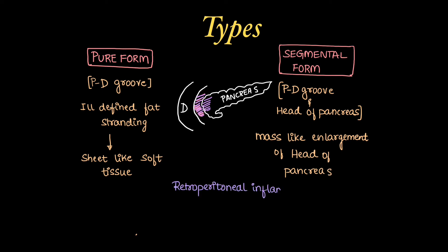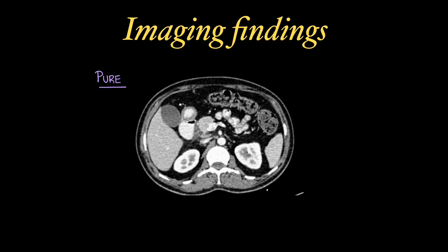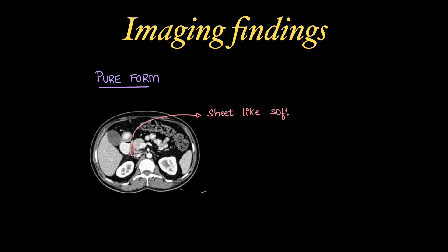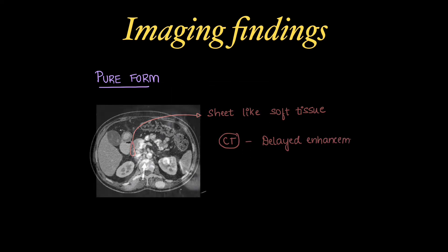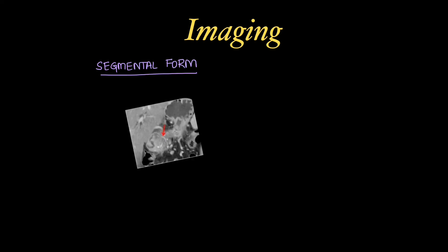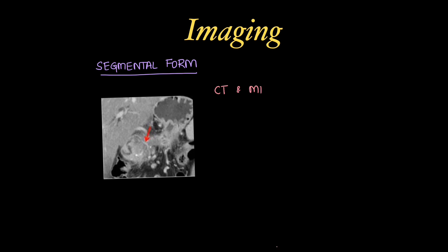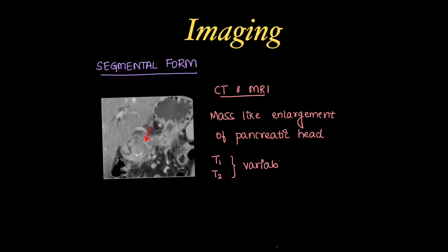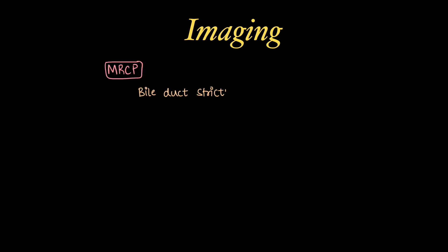Both forms will not have retroperitoneal inflammatory features, unlike conventional pancreatitis. Coming to imaging findings: the pure form shows a sheet-like opacity on CT with delayed enhancement. On MRI, tissue in the PD groove is hypointense on T1 and variable on T2 depending on the amount of fibrous tissue — in this case it is hyperintense. The segmental form on CT shows involvement of the PD groove and mass-like enlargement of the head of the pancreas with variable signal on MRI. MRCP can be done in cases of bile duct complications.